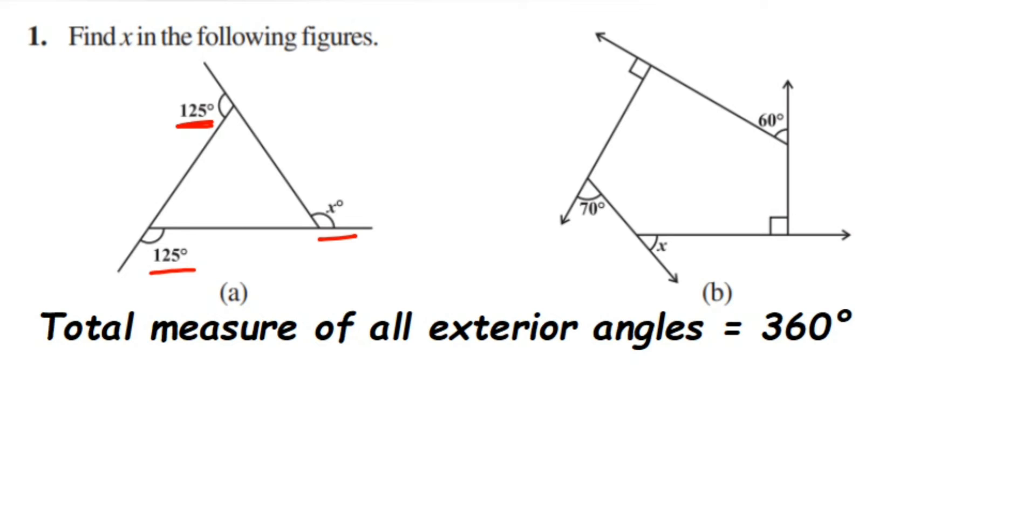So in the second question, they have not given any value but they have given a shape like a square shape here. So this means this is 90 degrees. There are two lines that are perpendicular. So they are making this line and this line are perpendicular, so they are making 90 degrees there. So the first angle will be 90 degrees.